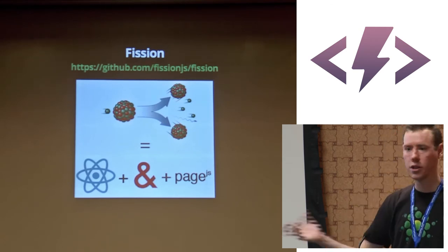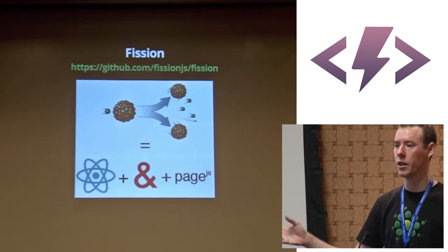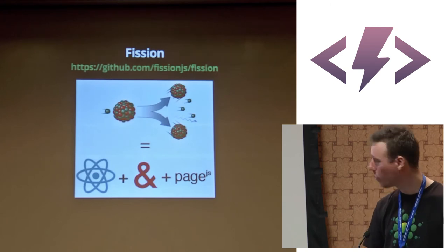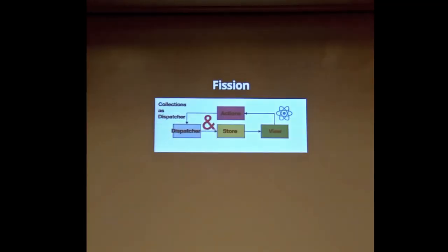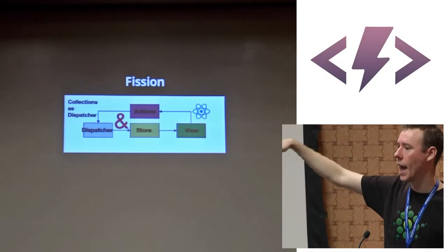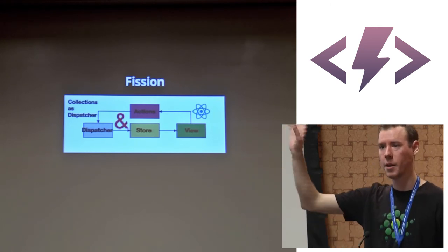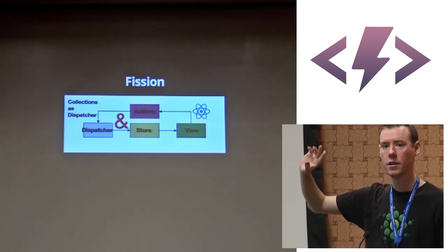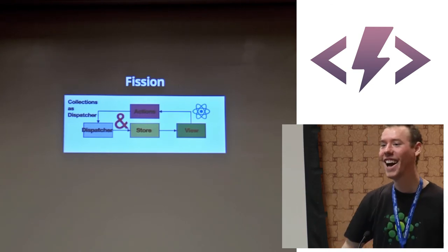Ampersand is a port of Backbone broken into really small pieces — we're just using the models and collections out of that. What does it end up looking like? We're using React for our view, but I like what Flux is doing fundamentally with actions, dispatcher, and store.